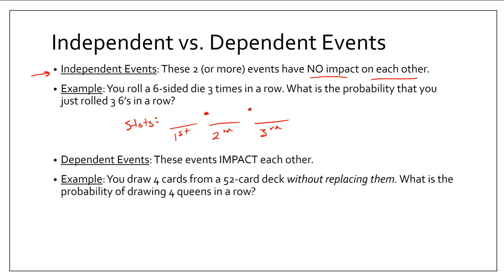What's really cool is I can treat them like slots. The first slot is the probability of rolling a six on the first roll — one out of six. The second slot, probability of rolling a six, is still one out of six. The third roll, still one out of six. So I'm left with one out of 216, which is about 0.5%. Independent events: each dice roll does not impact the other. I treat it like slots — it's easy.